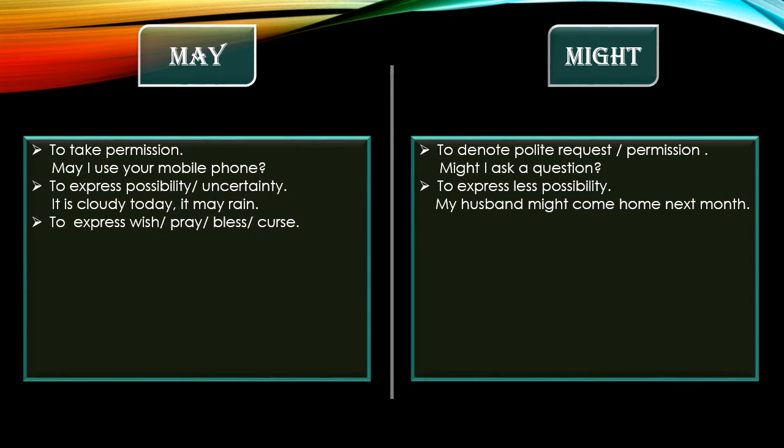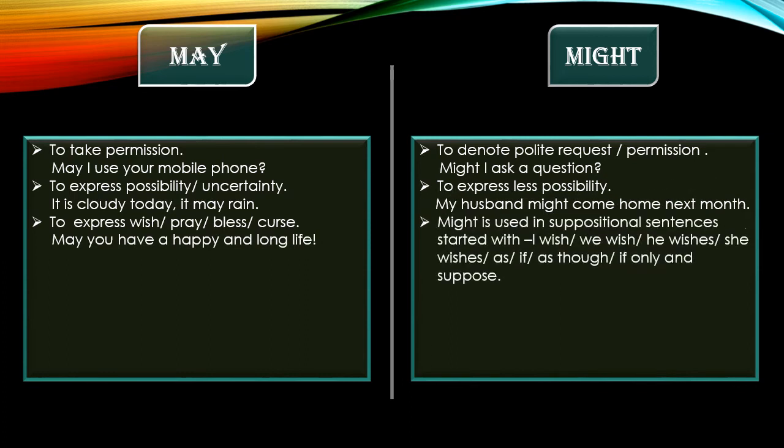May is used to express wish, pray, bless, and curse — that is, to show optative sentences. To express these feelings in optative sentences, we should use 'may.' For example: 'May you have a happy and long life' — this is a blessing.